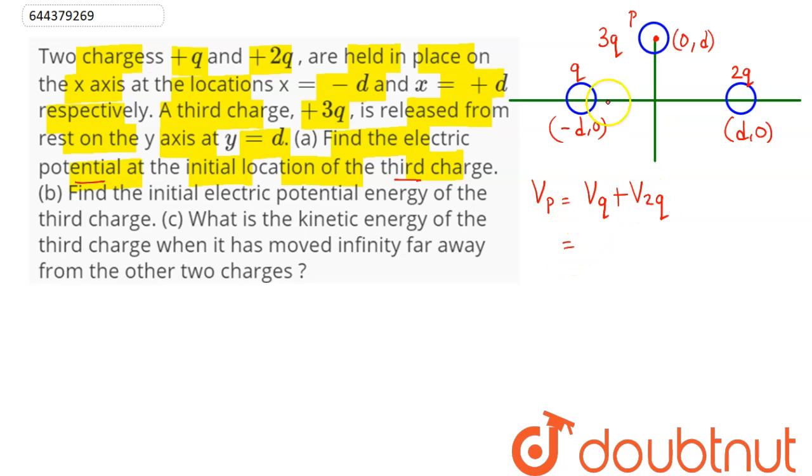So, potential due to q charge here will be given as potential due to a charge q at a distance r is kq by r. So, the distance of this point P from this q charge will be, this is d, this is d, so the distance between these two points is root under 2d.